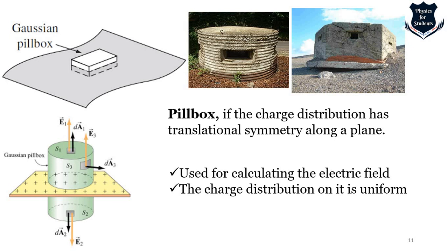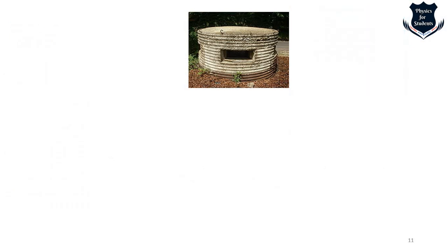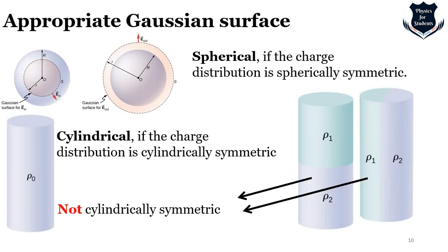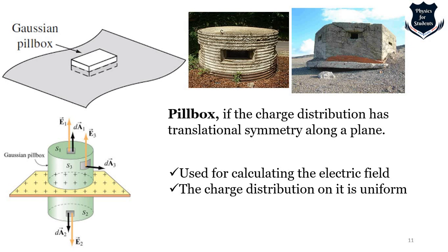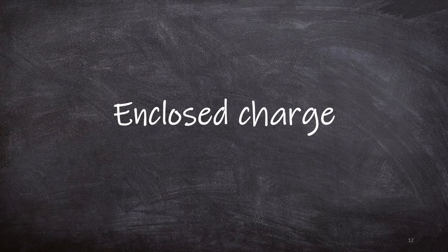Gaussian surfaces are only useful when some kind of symmetry exists. Gaussian cylinders are helpful in two simple scenarios: infinite sheet of charge or a line of charge. Gaussian spheres are useful when you have spherical symmetry. Gaussian surfaces are really just tools to facilitate calculations and elucidate the presence of symmetry — whether it is a pill box or a sphere.